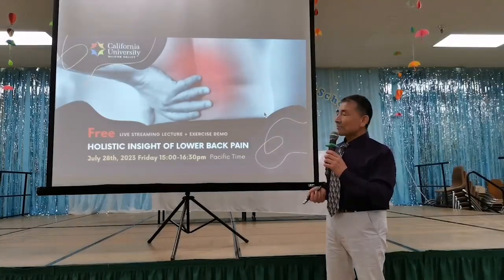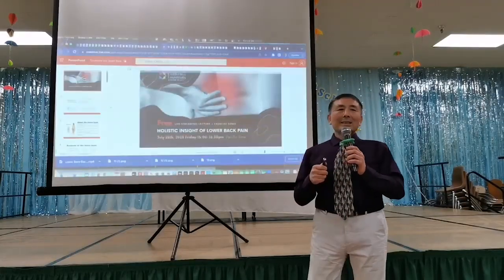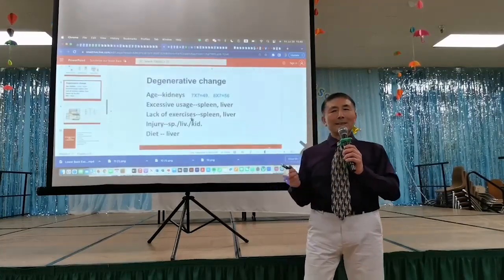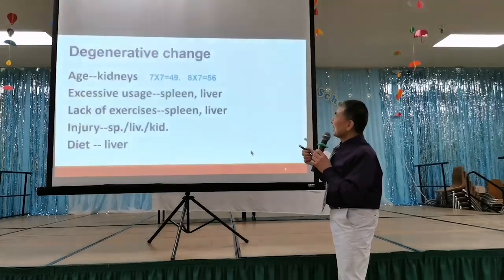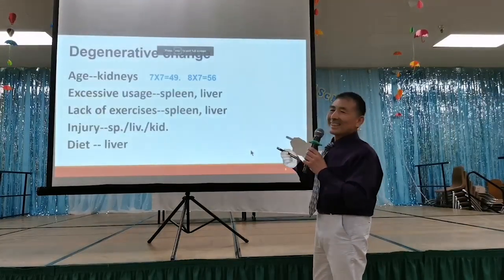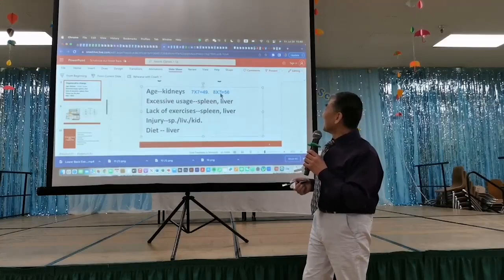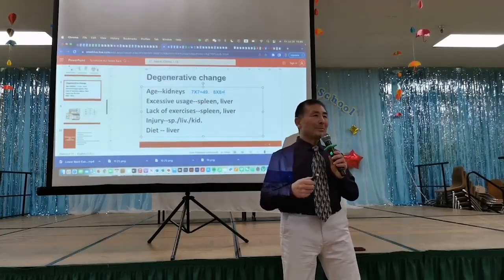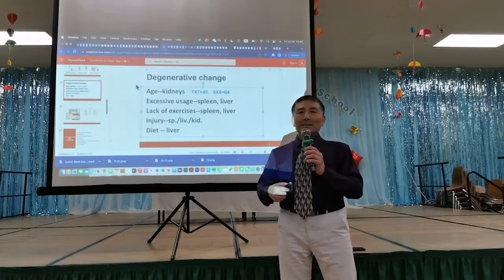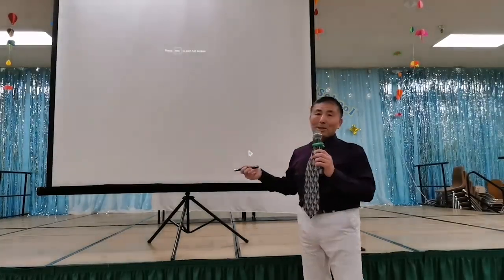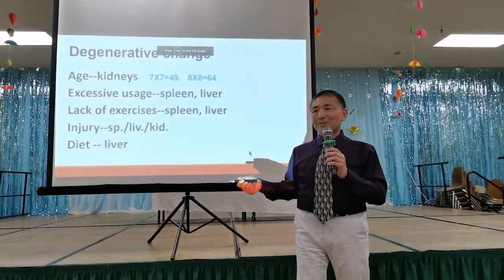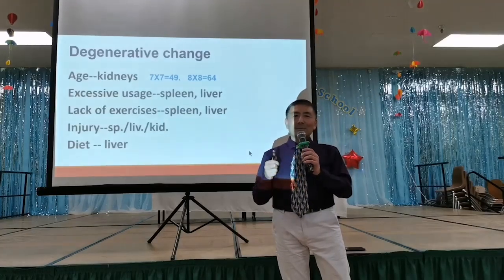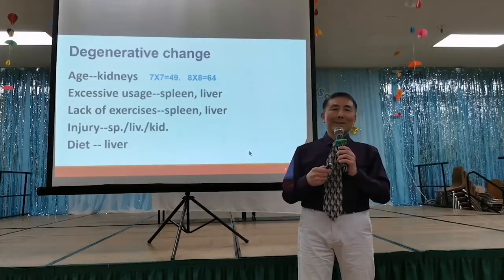For males, it's eight-year cycles — eight by eight equals 64. Males develop slower than females, and aging also comes later. After 64, no more testosterone to generate — that's called aging. This is just a reference, not exactly average. Some females see menopause over 55; I know someone who was 58 and still had their period — that's a good sign.